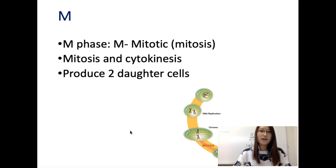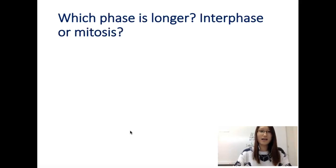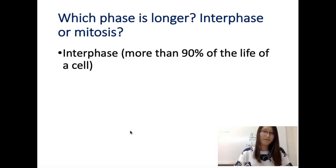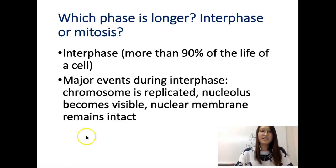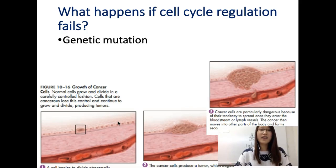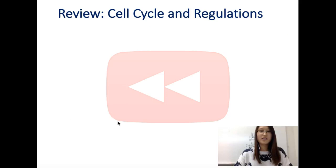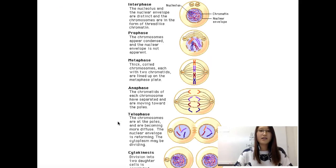The M phase produces two daughter cells. In the next video we'll cover how exactly mitosis happens. One key point: which phase is longer, interphase or mitosis? It has to be interphase — the preparation is always longer than the actual division. Roughly 90% of the cell's life is spent in interphase. Major interphase events: chromosomes replicated, nuclear membrane remains intact. If cell cycle regulation fails, you can get mutations and the cell may become cancerous.